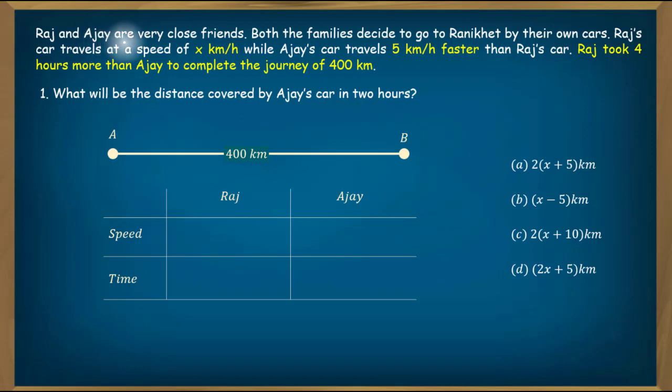Raj and Ajay are very close friends. Both the families decide to go to Raniket by their own cars. Raj's car travels at a speed of x kilometer per hour, while Ajay's car travels 5 kilometer faster than Raj's car. Raj took 4 hours more than Ajay to complete the journey of 400 kilometer.